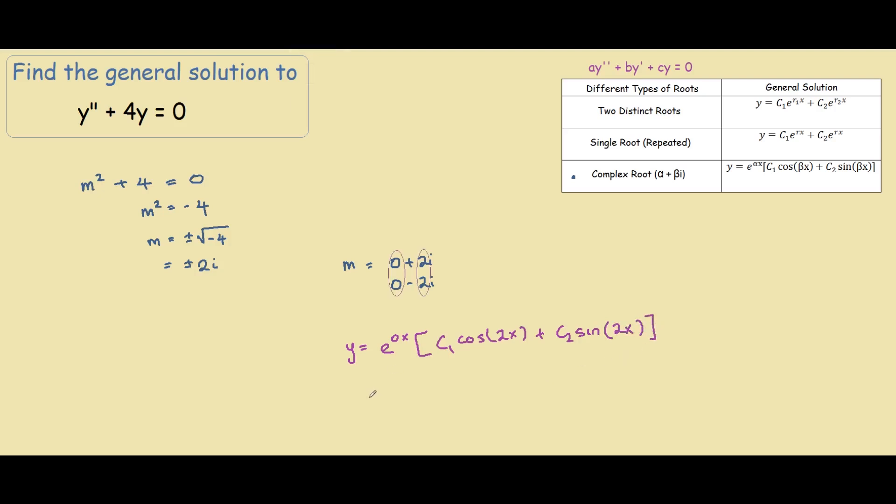So if we simplify this down, e to the power of 0 is just 1, so ignore it. We have c₁ cos 2x plus c₂ sin of 2x. And this is the answer to our question.